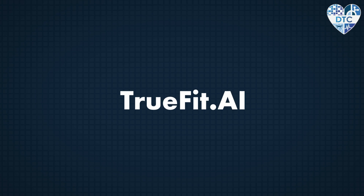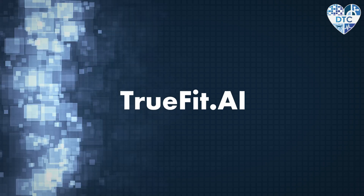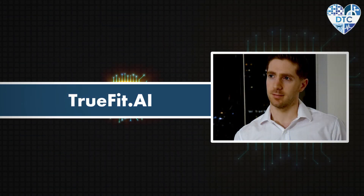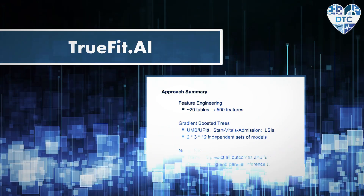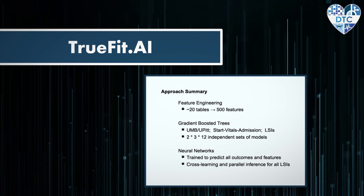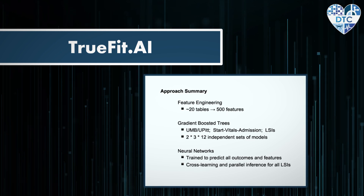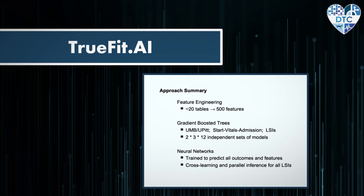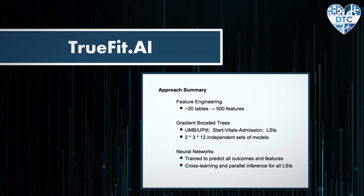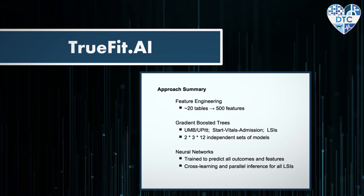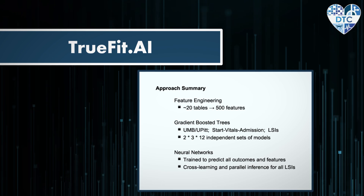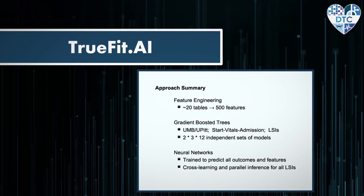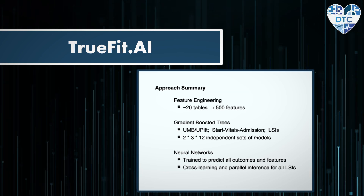Team TrueFit AI's approach included feature engineering from around 20 tables to 500 features, gradient-boosted trees, and using neural networks to train and predict all outcomes and features, with cross-learning and parallel inference for all LSIs.